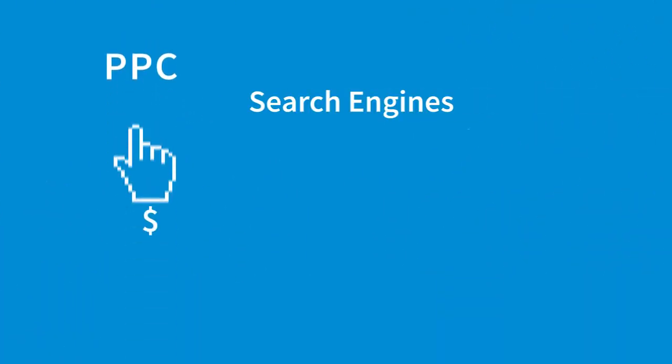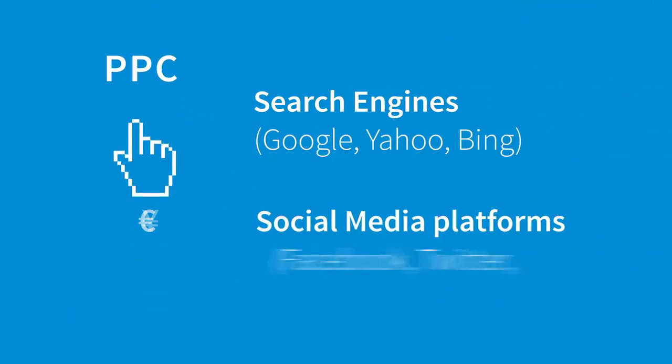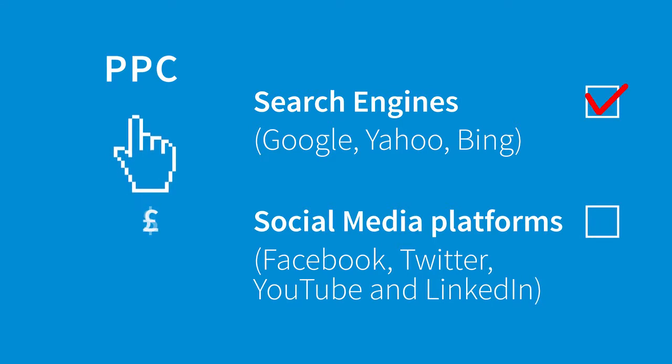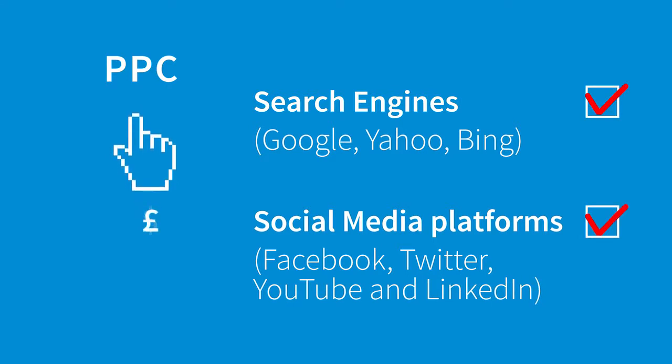With organic, the strength of your content is what drives likes if you're on Facebook, and drives you to the top of a search engine result if you're on Google. But in social media, if you pay-per-click, you're basically putting your content towards the top of the page.